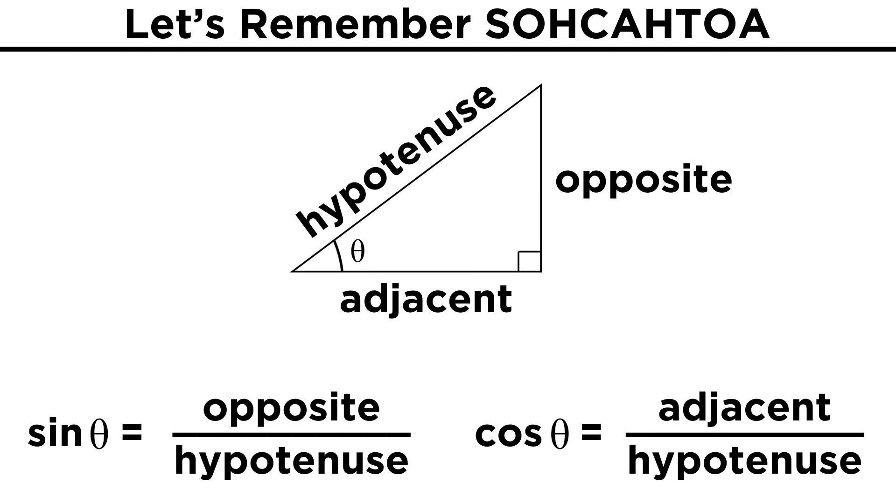First we must recall what sine and cosine are. From SOHCAHTOA, sine means the length of the leg opposite the angle over the length of the hypotenuse, and cosine means the length of the leg adjacent to the angle over the length of the hypotenuse.